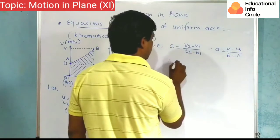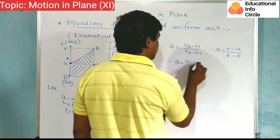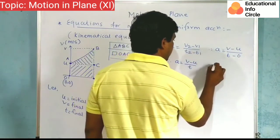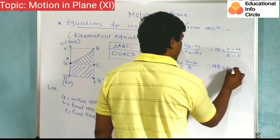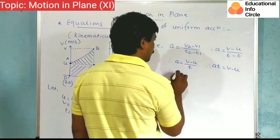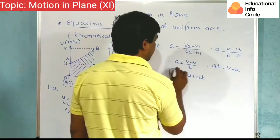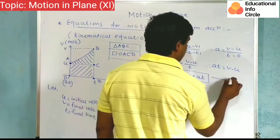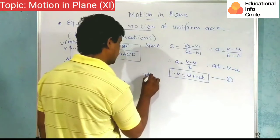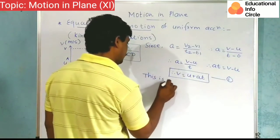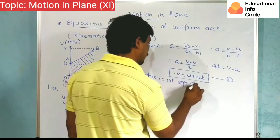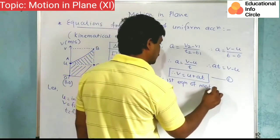Now from the definition of acceleration, a is equal to change in velocity upon change in time. v minus u upon t. Therefore, at is equal to v minus u. Therefore, v is equal to u plus at. This is the first equation of motion.